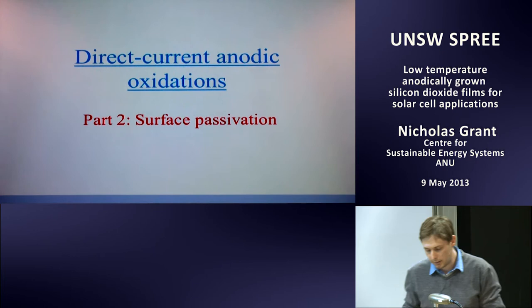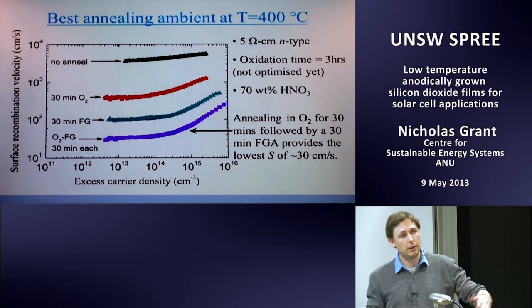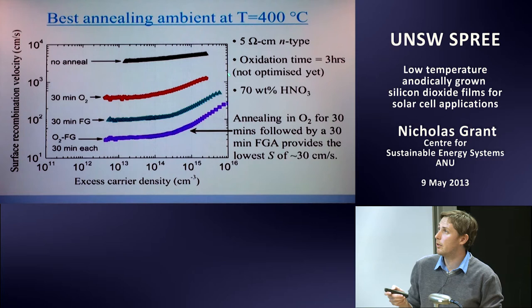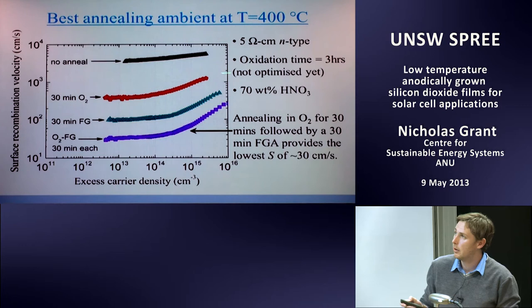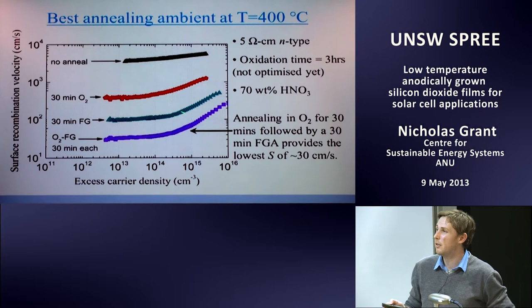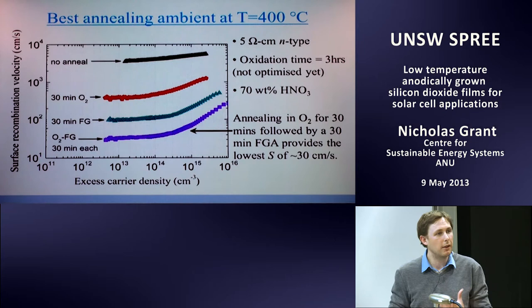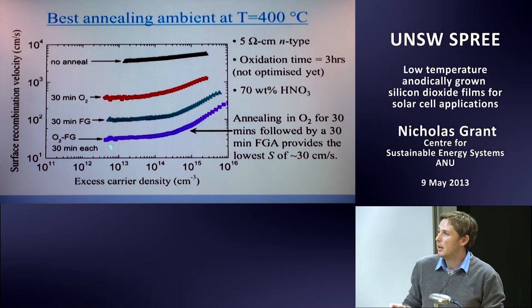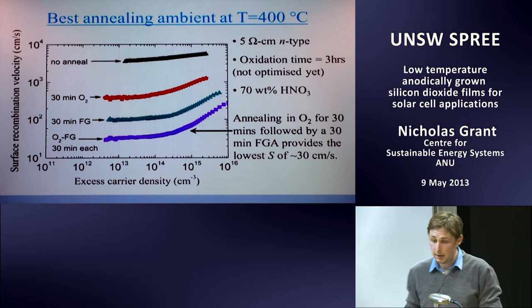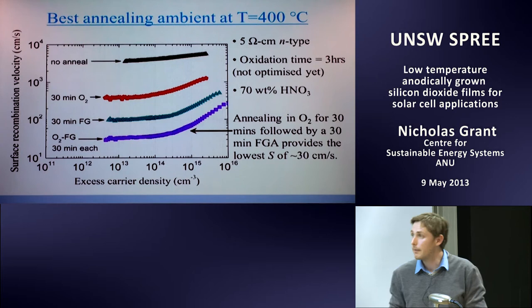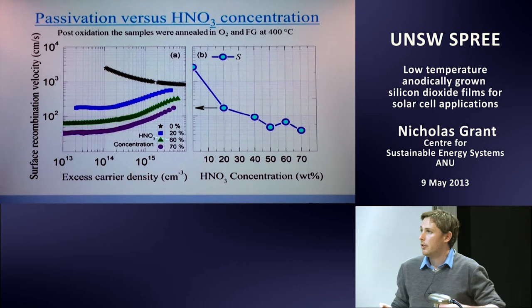Now let's look at surface passivation. We grew the oxide for three hours and annealed at 400 degrees. With no anneal, surface recombination is very high. An oxygen anneal improves it but it's still very high. A 30-minute forming gas anneal drops it to a suitable level. But the best sequence is the oxygen then forming gas combination — O2 for 30 minutes followed by forming gas for 30 minutes — providing a reasonably low surface recombination of about 30 centimeters per second.